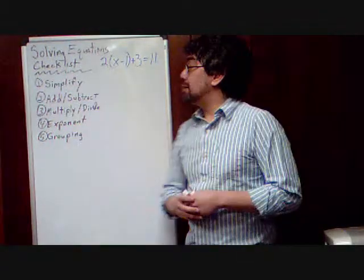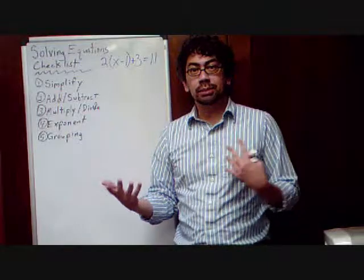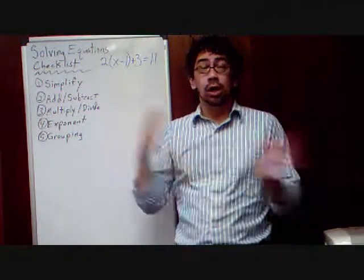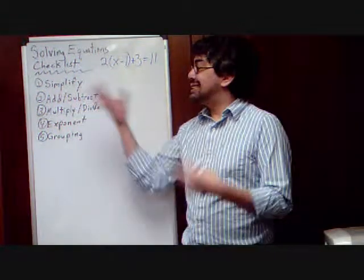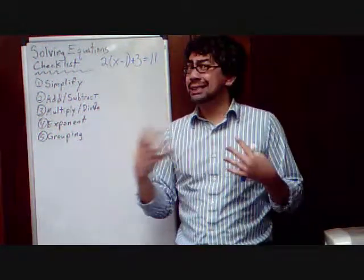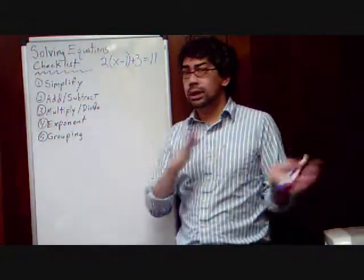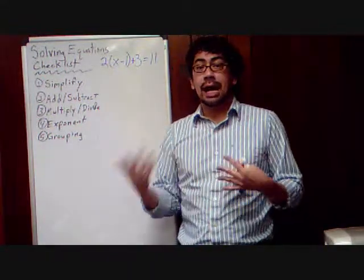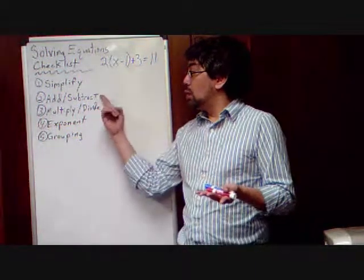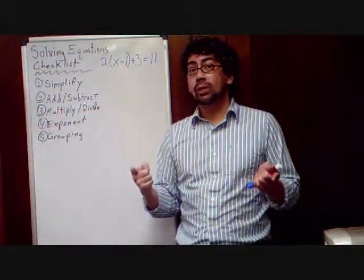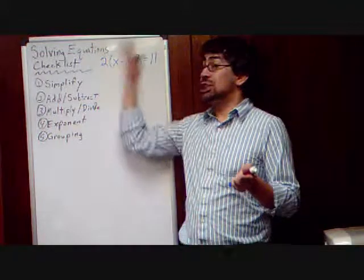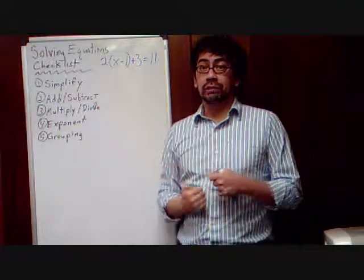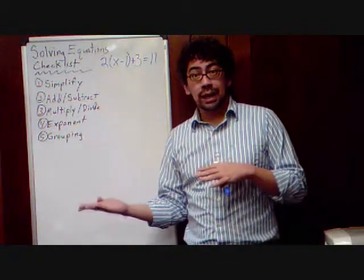You can see our steps start with simplify. When we look at simplify, we're talking about anything we can do on one side of the equal sign or the other to simplify, make it look simpler. We're not going to deal with moving sides yet. We don't deal with that until the second step, add or subtract. Once we get to the second step, now we're going to deal with switching sides. We switch sides using inverse operations. That's opposite operations.